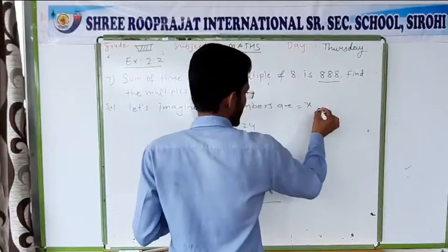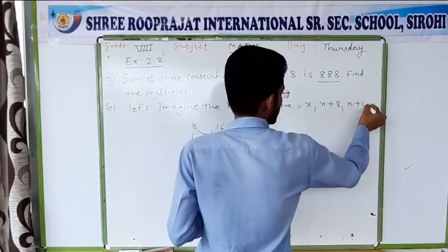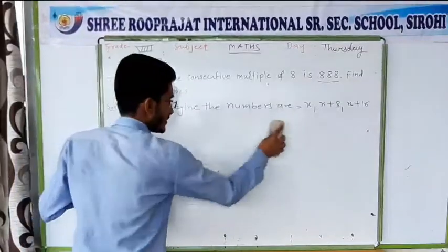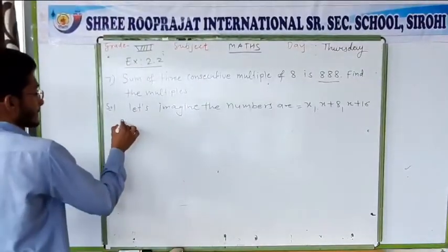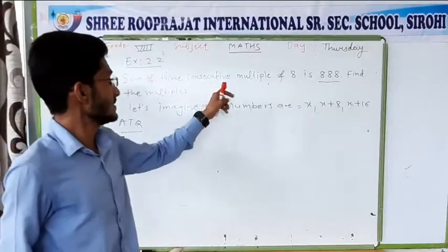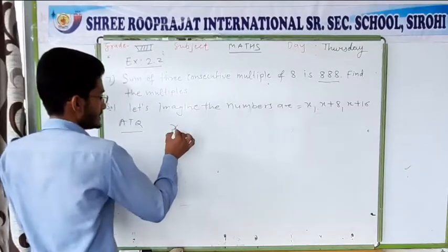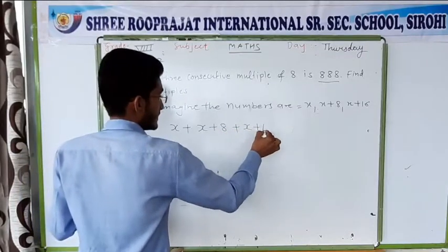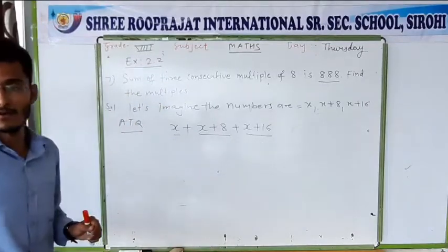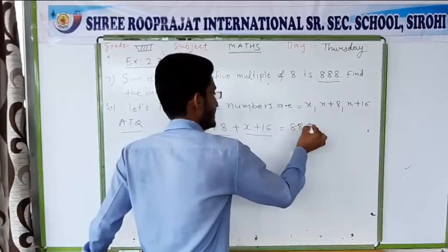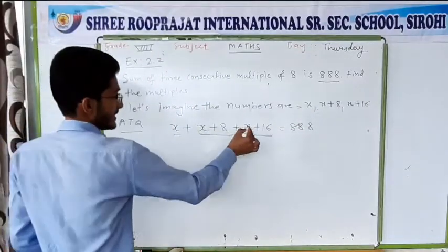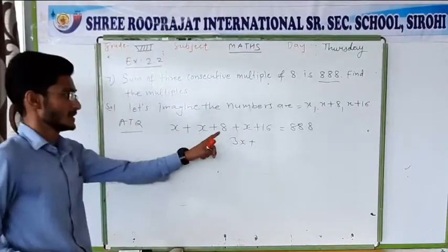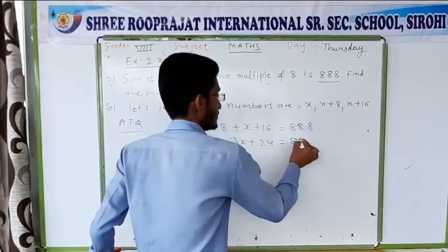So the numbers are x, x plus 8, and x plus 16. According to the question, the sum of these three consecutive multiples is 888. So if we add all three: x plus x plus x gives 3x, and 8 plus 16 gives 24. So the equation is 3x plus 24 equals 888.